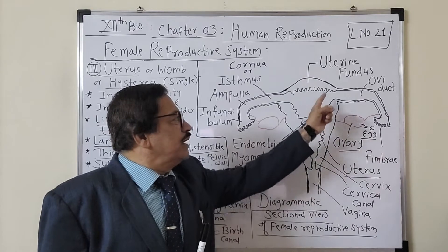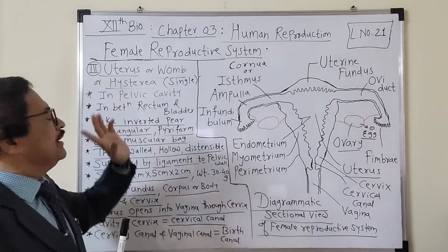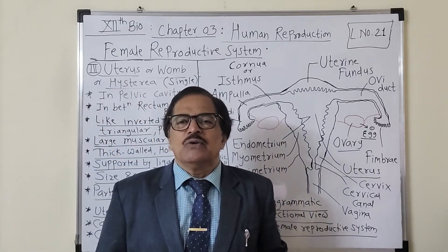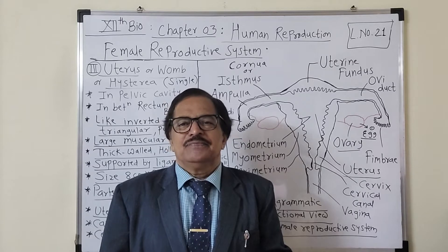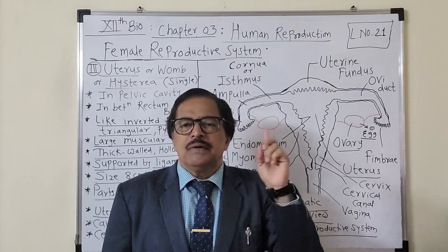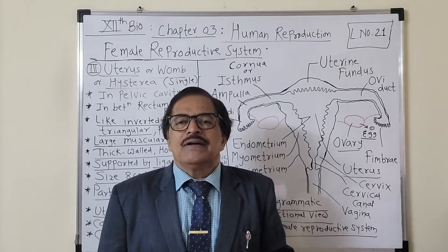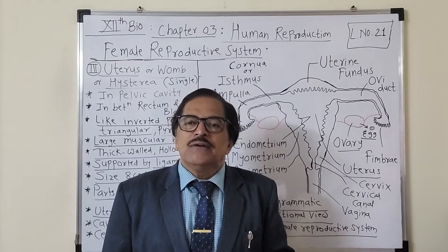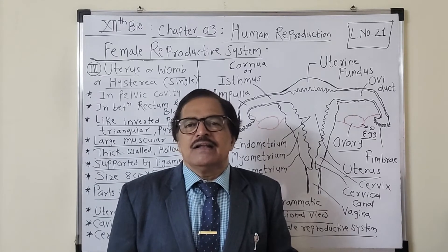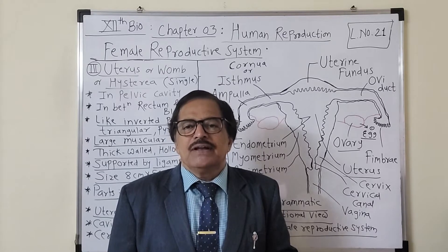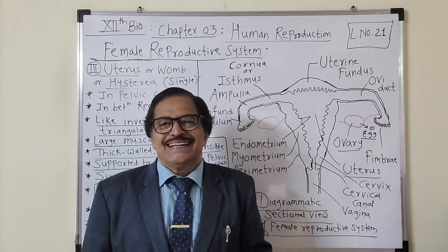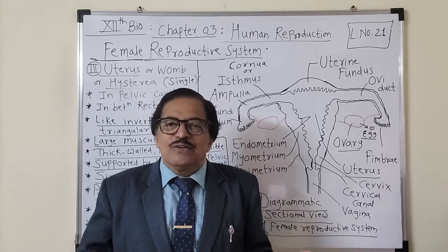The uterus is placed in the pelvic cavity. The whole female reproductive system is housed in the pelvic cavity. The pelvic girdle — the skeleton present in the pelvic region — is broader in women than in men, and the reason is to accommodate this entire system.